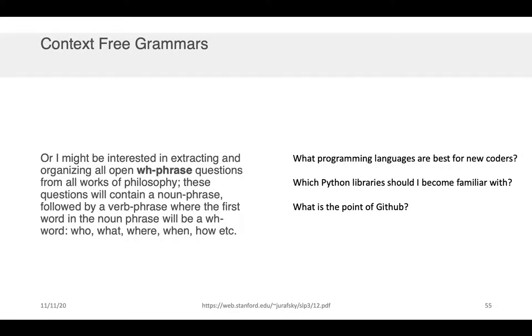Let's think through one more example. We might be interested for example in extracting and organizing all open WH phrase questions from a work of philosophy. So these are questions that contain a noun phrase followed by a verb phrase but where the first word in the noun phrase starts with one of the WH words - so who, what, where, when, how, why, etc.